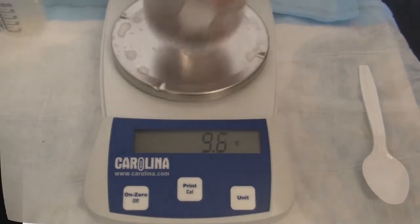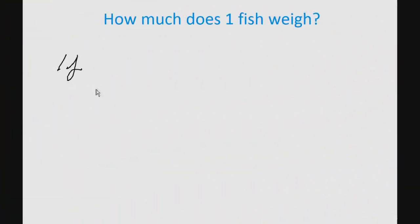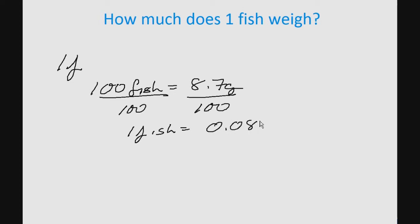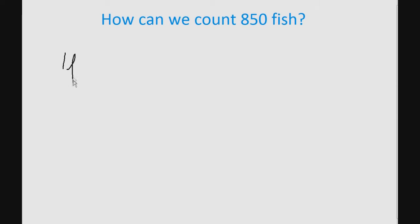Now, a little math. How can we calculate how much one fish weighs? We just calculated that 100 of our fish equal 8.7 grams. Divide both sides by 100 and we calculate that one of our fish weighs 0.087 grams on average.